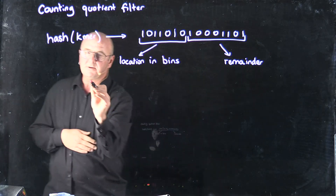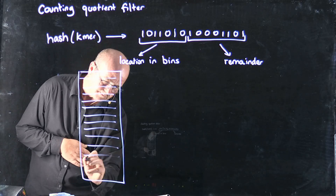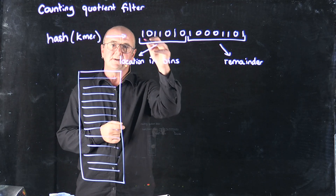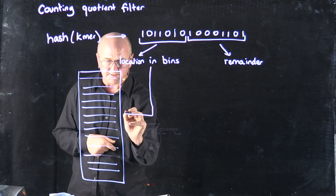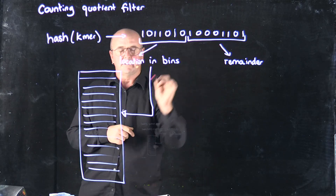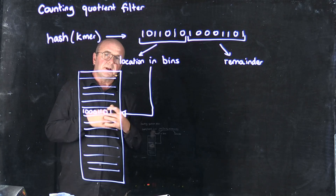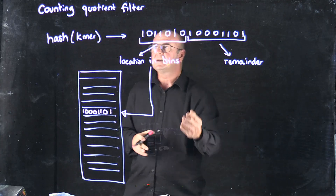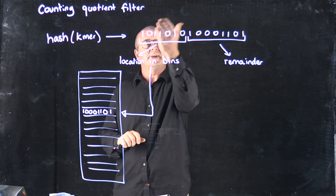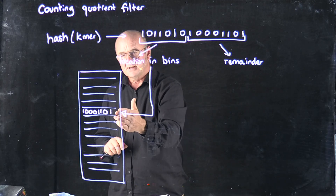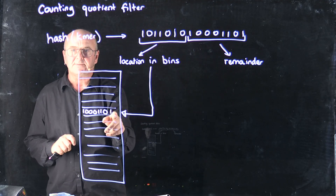What you do is you take your bins — let's say we've got our bins looking like this. Because I've got a location from the high bits, I'm going to find that location and at that location, I'm going to store the low bits. The low bits are kind of like a fingerprint, because if I take the same k-mer and pass it through the same hash function, I'm going to get the same result. So I can take the high bits, go to that location, and check: do I have the same fingerprint, do I have the same remainder that I've already seen? If I do, I know I've already seen that k-mer.